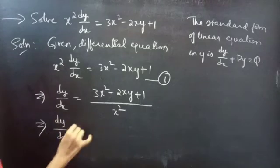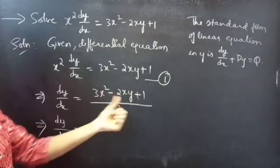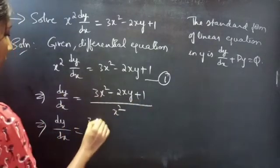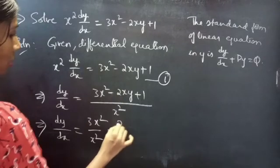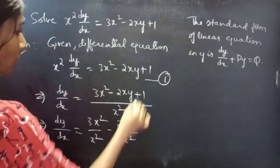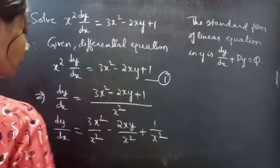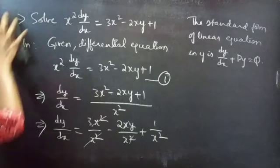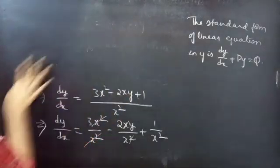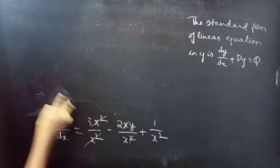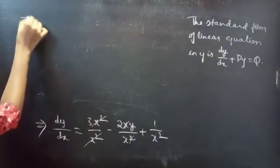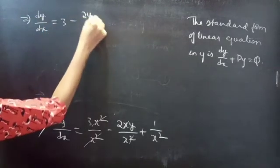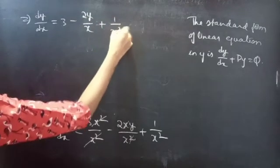Then dy by dx equals — notice the numerator has 3 terms and the denominator has 1 term, so we can split this into 3 terms: 3x squared by x squared, minus 2xy by x squared, plus 1 by x squared. Here x squared cancels in the first term and one x cancels in the second, giving dy by dx equals 3 minus 2y by x plus 1 by x squared.